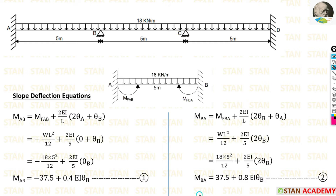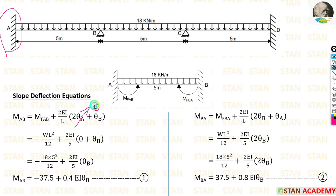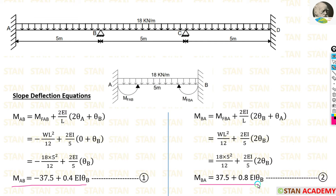First, we make the slope deflection equations for span AB. We need the fixed end moments by treating each span as a separate fixed beam. With UDL acting over the full span, the formulas are −WL²/12 and +WL²/12. M_AB is negative (anti-clockwise) and M_BA is positive (clockwise). With W = 18 and L = 5, we apply the values. Since A is a fixed support, θA = 0 and is removed from both equations.